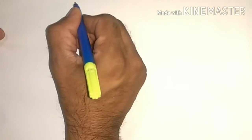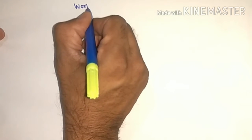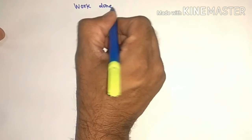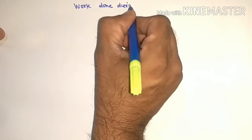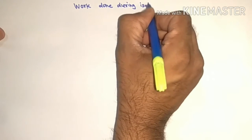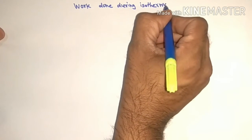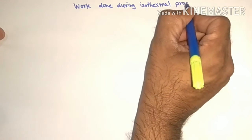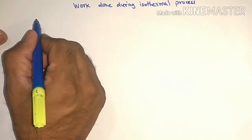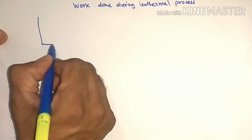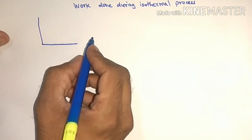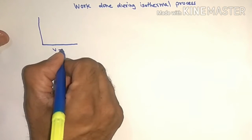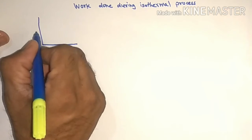Today we will discuss work done during isothermal process. Now let us draw a diagram. First on x-axis volume V, on y-axis pressure P.